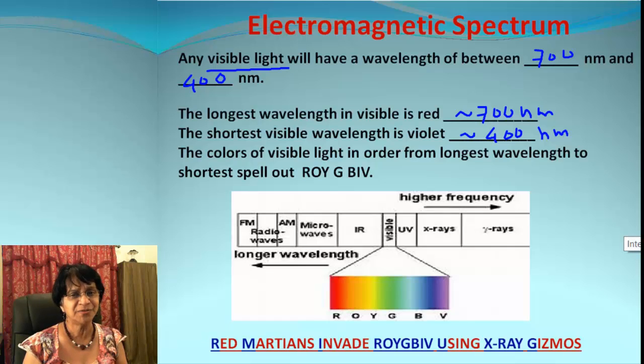Now this is the example of full range spectrum and there are different categories. How do you remember that? I want you to focus and look at the phrase which we have here. It says: Red Martians Invade ROYGBIV Using X-ray Gizmos. Let's pick up every single first letter from every word.